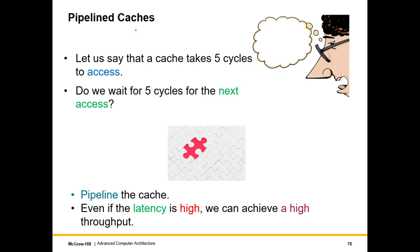Let's start with a question. Let us say that a cache access takes five cycles, which can be the case particularly if we have a large L1 cache and a reasonably aggressive block cycle time. In that case, it is very much possible that we have a cache that takes three, four, or five cycles to access. A larger cache such as the L2 cache can take even more time. The critical question is: do we wait five cycles for the next access? The answer is no.